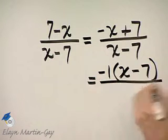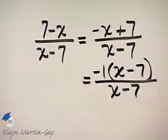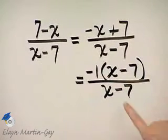So I haven't changed it, but now I have a factor of x minus 7 in the numerator and a factor of x minus 7 in the denominator.